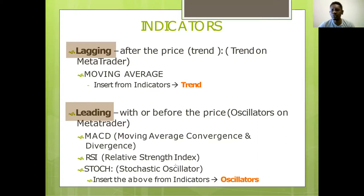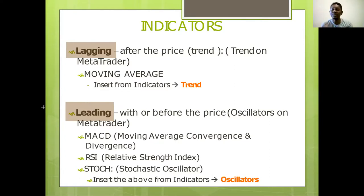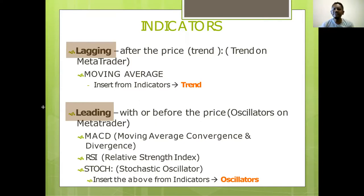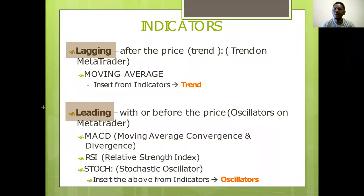All indicators are made up of two genes — whether leading or lagging. Moving average comes from the lagging indicator family. When you go to your MT4 under 'Trend,' all indicators that appear there are lagging indicators. All that appear under 'Oscillators' are leading indicators. The difference between each one of them is sensitivity — the extent to which they work.